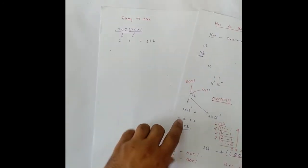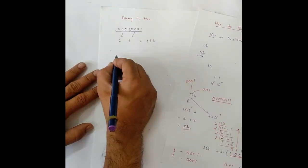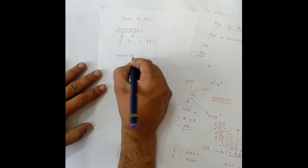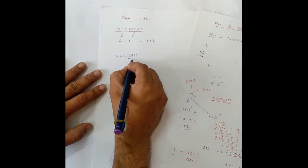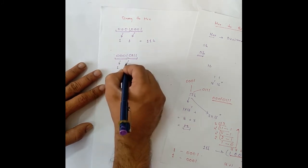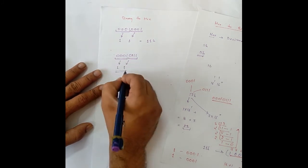Similarly, let's check for this. We have 0 0 0 1 0 1 1 1. We will segregate them in parts of 4. This gives us 1 and this gives us 7. So, this is the hexadecimal.